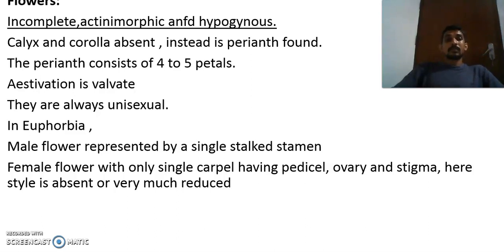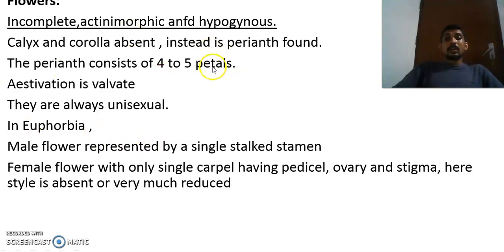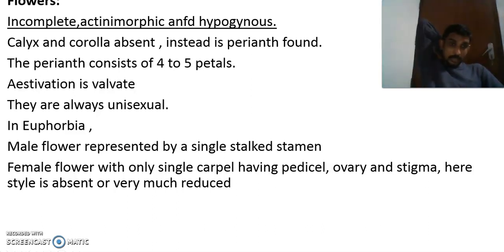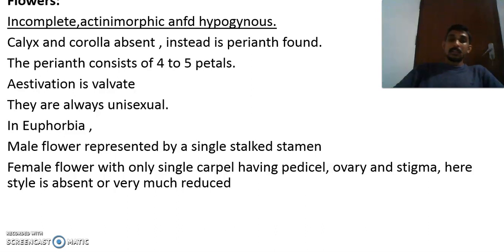The ovary is superior, which is why the flower is called hypogynous. Calyx and corolla are completely absent, making the flower incomplete. The perianth consists of four to five tepals — the unit of perianth is called a tepal, not a petal. The aestivation of the perianth or involucre is valvate — they are arranged in a face-to-face manner.